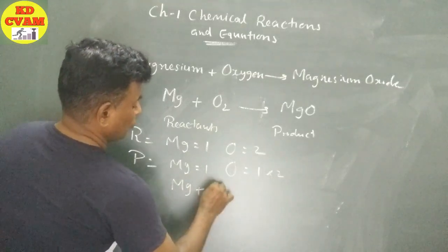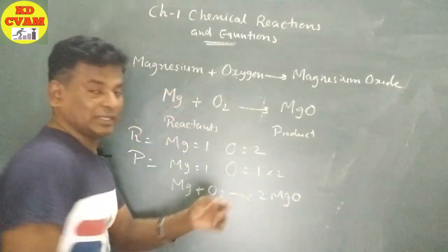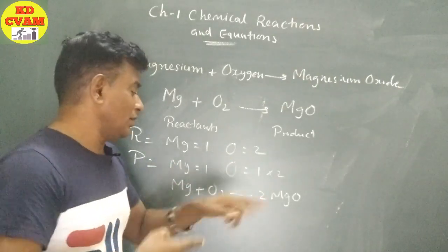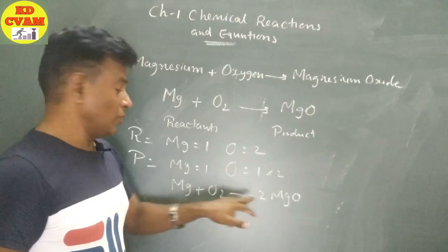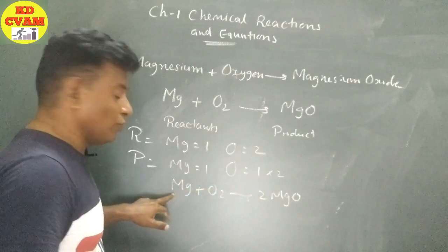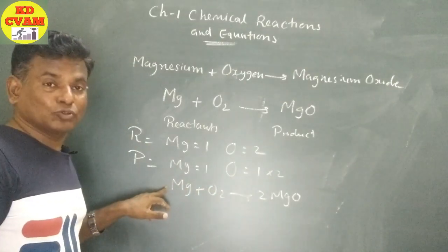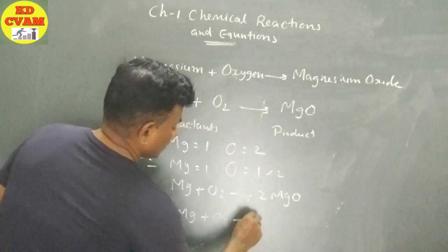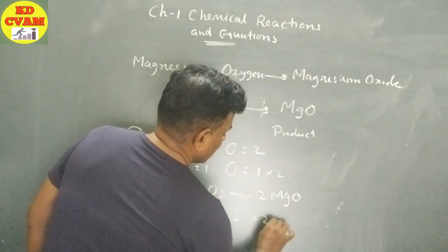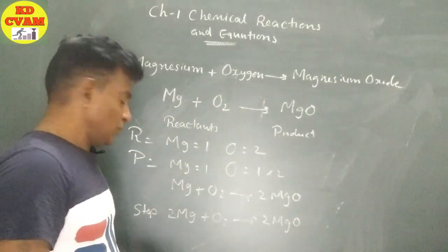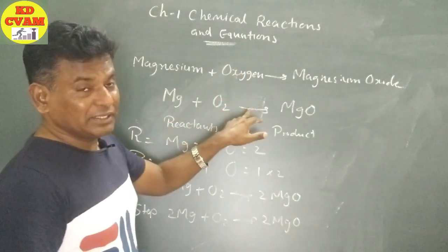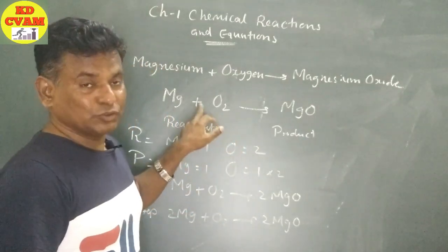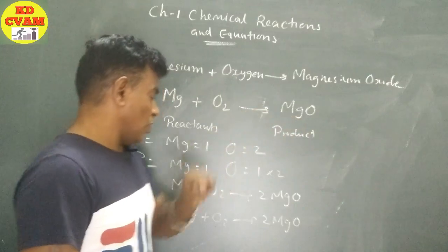Mg plus O2 gives 2MgO. Now oxygen is balanced. Magnesium: left side has 1, right side has 2, so next step we balance magnesium. The final step: 2Mg plus O2 gives 2MgO. This is the balanced equation. The unbalanced form Mg plus O2 gives MgO is called the skeletal chemical equation.